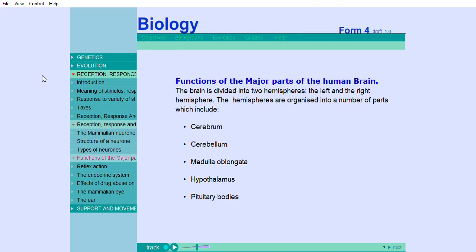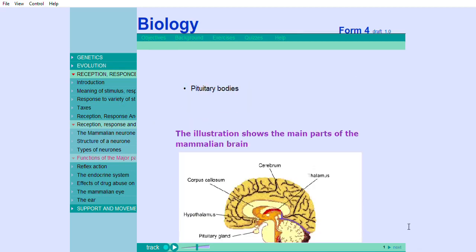cerebellum, medulla oblongata, hypothalamus, and pituitary bodies. The illustration shows the main parts of the mammalian brain.